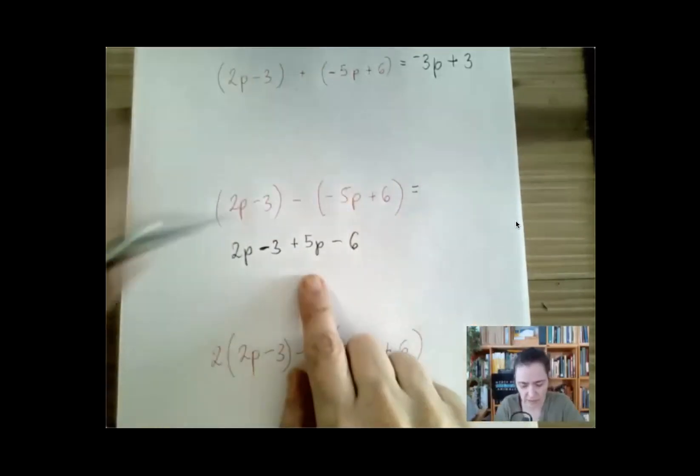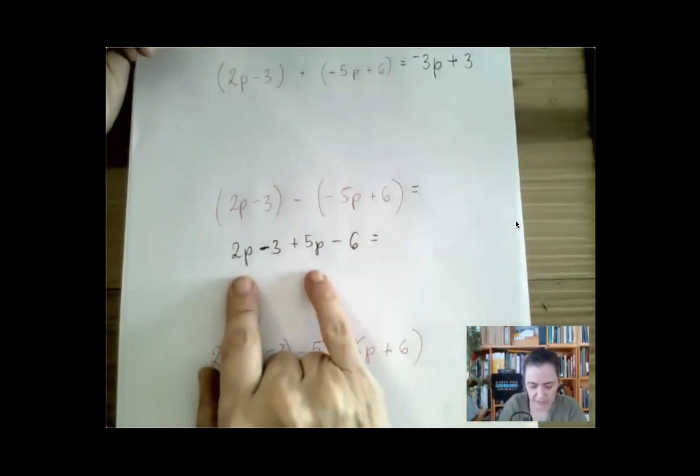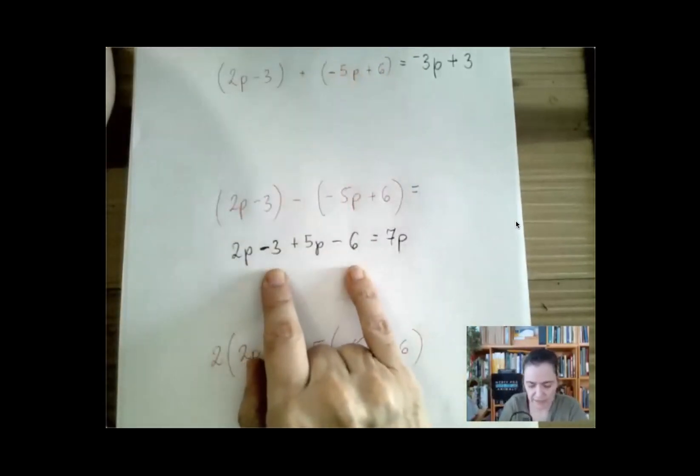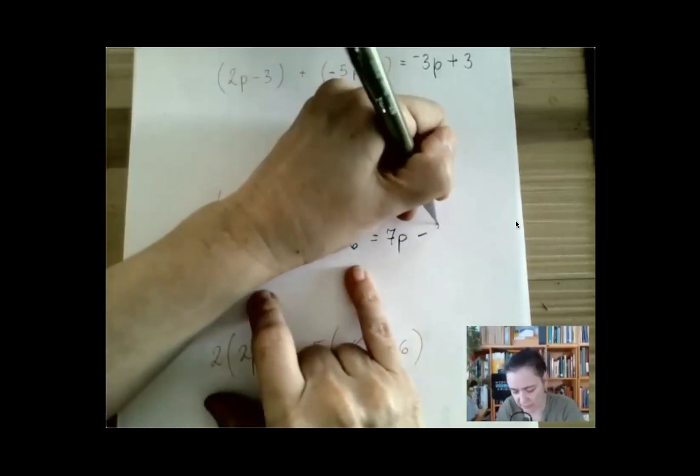And now we can combine like terms. We get 2p plus 5p, 7p, and negative 3 and negative 6. When combined, we get negative 9.